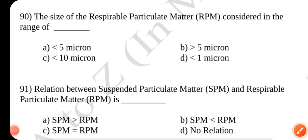Question number 90. The size of the respirable particulate matter considered in the range of dash.